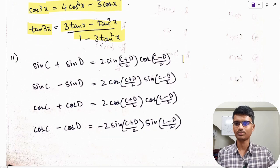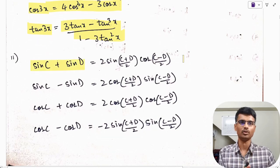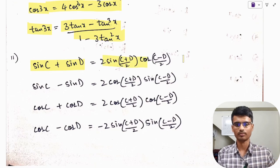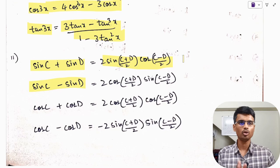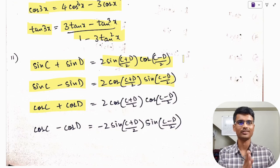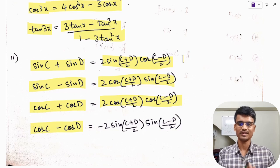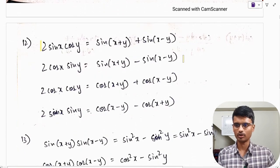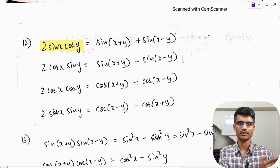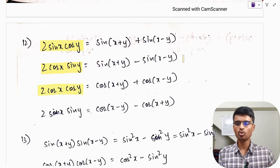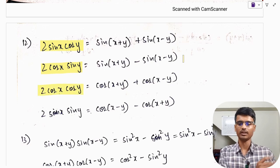The sum-to-product formulae: sin C + sin D = 2 sin((C+D)/2) cos((C−D)/2). Sin C − sin D = 2 cos((C+D)/2) sin((C−D)/2). Cos C + cos D = 2 cos((C+D)/2) cos((C−D)/2). Cos C − cos D = −2 sin((C+D)/2) sin((C−D)/2). The product-to-sum formulae: 2 sin x cos y = sin(x+y) + sin(x−y). 2 cos x sin y = sin(x+y) − sin(x−y). 2 cos x cos y = cos(x+y) + cos(x−y). 2 sin x sin y = cos(x−y) − cos(x+y).